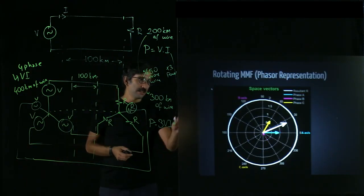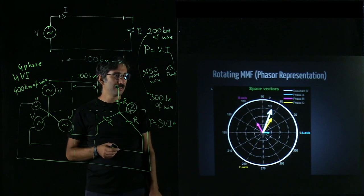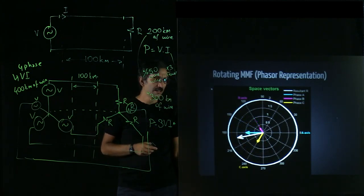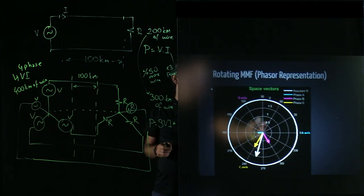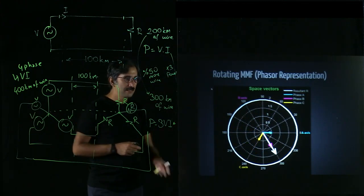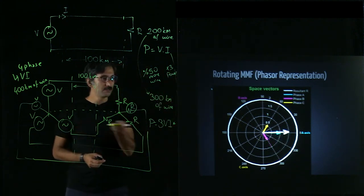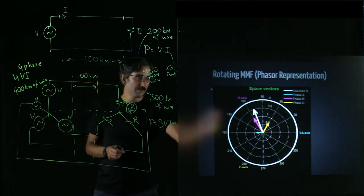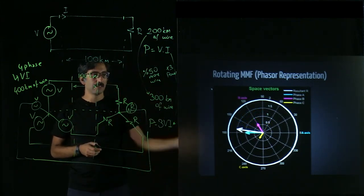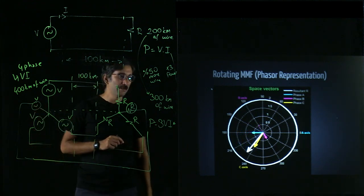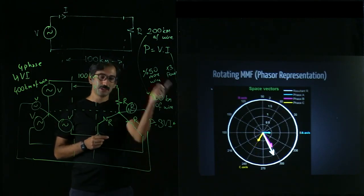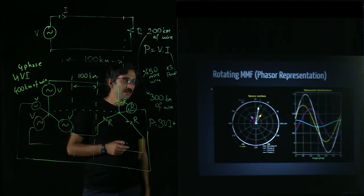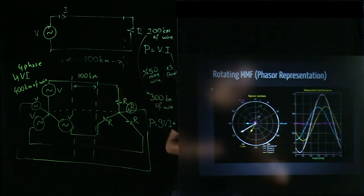For those familiar with phasor diagrams, here is the same representation on a phasor diagram. The yellow vector's magnitude changes but its direction is constant — going up and down. The blue one is in the horizontal direction. When you add all three vectors vectorially, you get the white vector, which has constant magnitude but rotates continuously. You can achieve a similar rotating MMF with a four-phase or five-phase system, but three is the most optimum number.